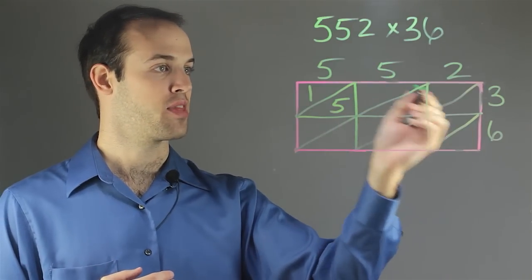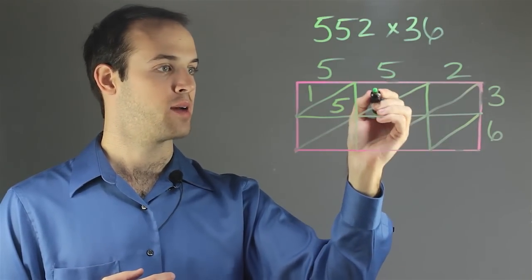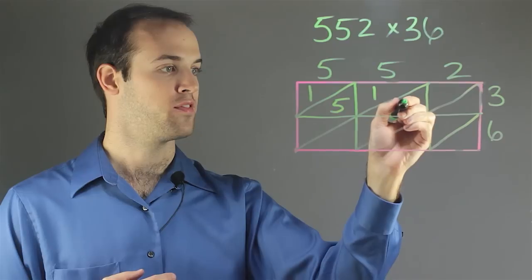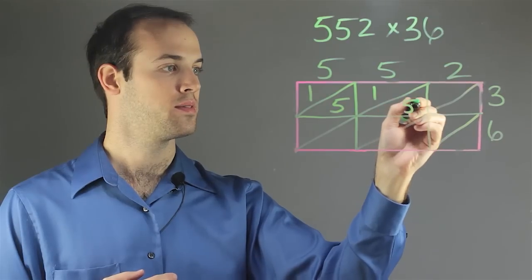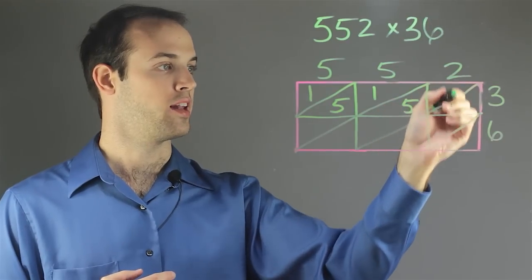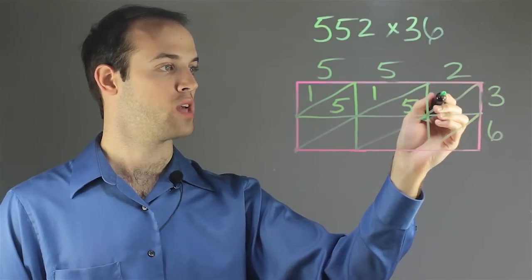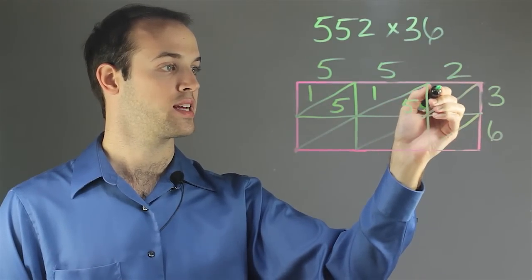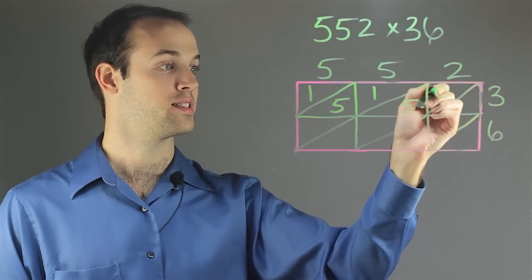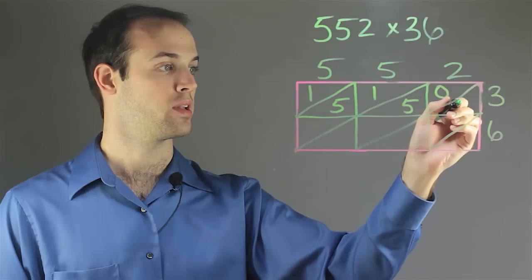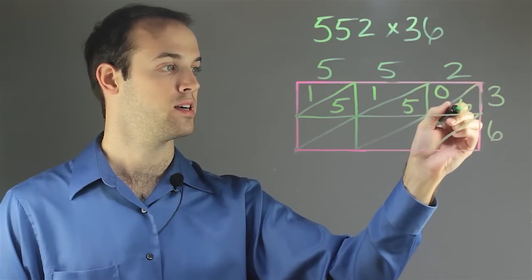And in this box, same thing — it's 5 times 3, so I'm going to write 15. And in this box it's going to be 2 times 3, which is 6. So that has a 0 in the tens place and a 6 in the ones place.